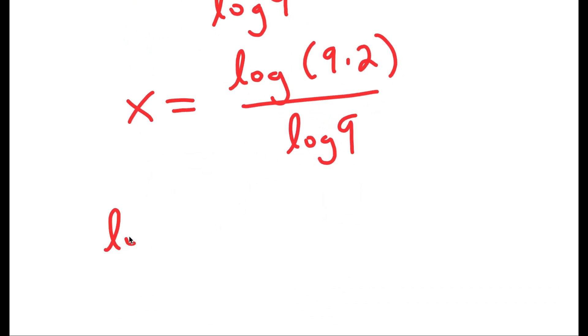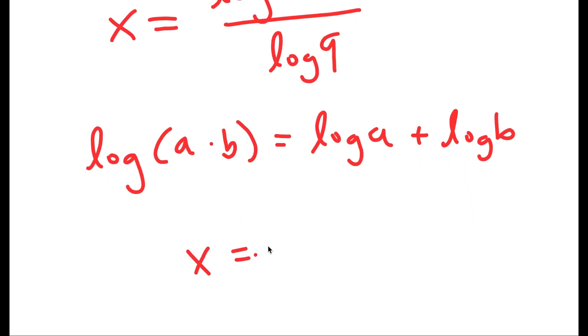So if I have something in the form log of a times b, this is equal to log a plus log b. So in this case, this turns into log 9 plus log 2 over log 9.